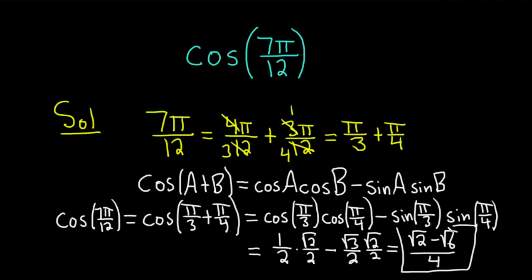And so that would be our final answer. This would be the value of the cosine of 7π over 12. I hope this video has been helpful to someone out there in the world. Until next time, good luck and take care.